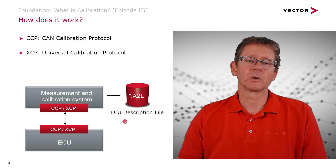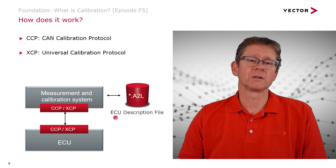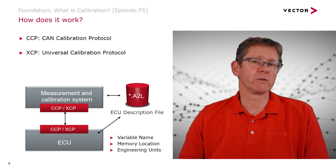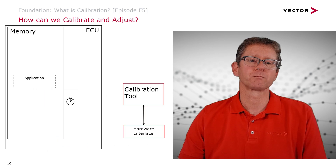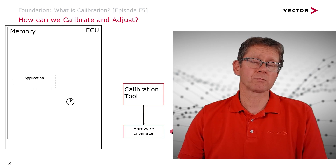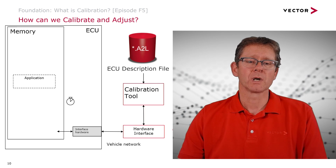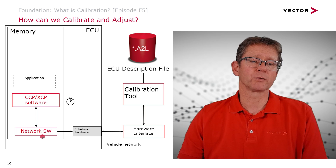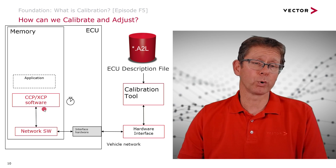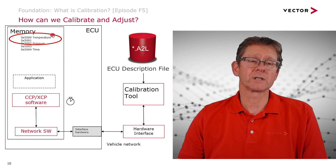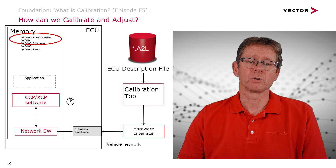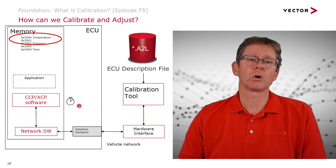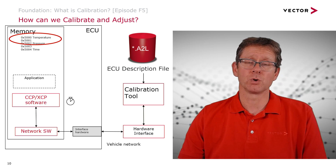We then need an ECU description file called an A2L file. This tells us where our variable is, what it's called, and how we interpret it — engineering units, volts, degrees, etc. So we have a calibration tool and our interface hardware. We use an A2L description file and then the vehicle network to talk to our ECU. That message is sent to our network software and to the CCP software, which will point to an address, get the data from that address, and send it back to the calibration tool. We might use a timer within the ECU to control the repeated transmission of that data back to the calibration tool.